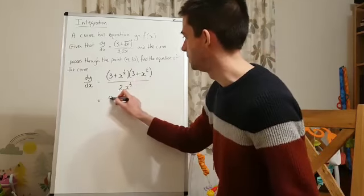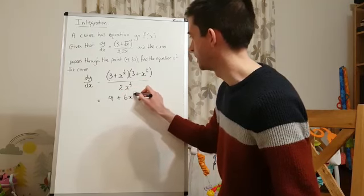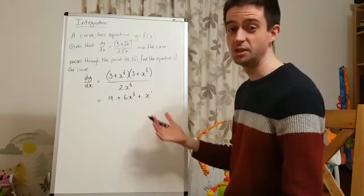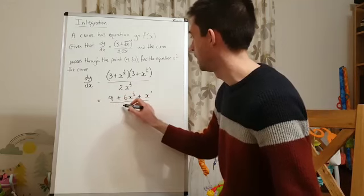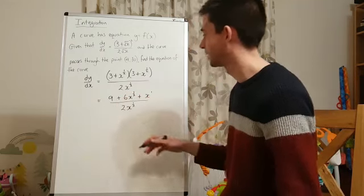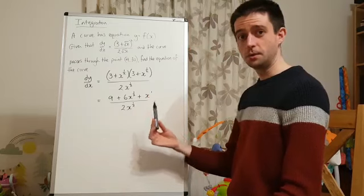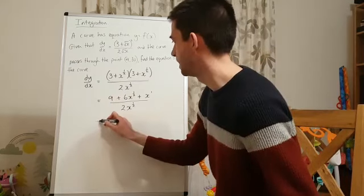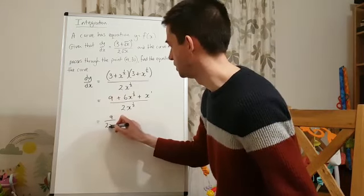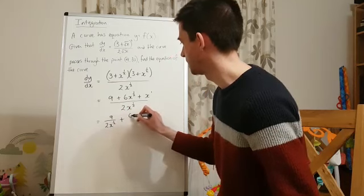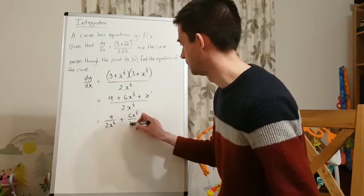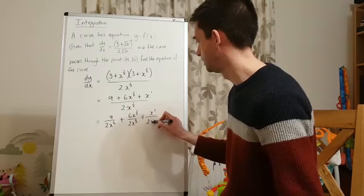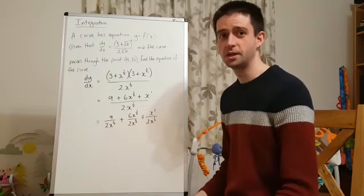So, what that's going to give me is 9 plus 6x to the half plus x to the power of 1, adding the indices. And you can either write that 1 or not. Over 2x to the power of a half. Now, to get this into number x power form, I'm going to separate those three terms on the numerator over the denominator. So, I'm going to write 9 over 2x to the power of a half plus 6x to the half over 2x to the half plus x to the 1 over 2x to the half.